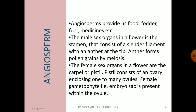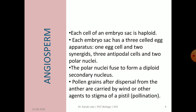The male sex organ in a flower is the stamen, which consists of an elongated filament with an anther at its tip. Anthers are responsible for producing pollen grains by the process of meiosis. The female sex organs are carpel or pistil, and it consists of an ovary containing one to many ovules. Pistil is differentiated into stigma, style and ovary.